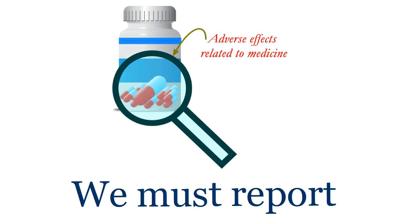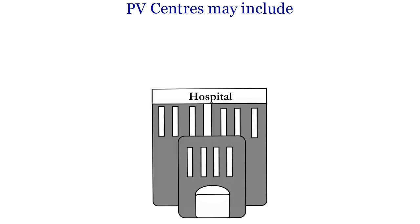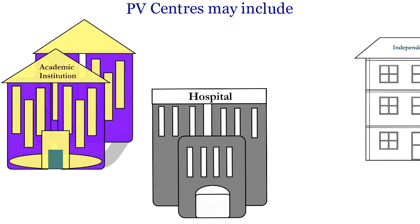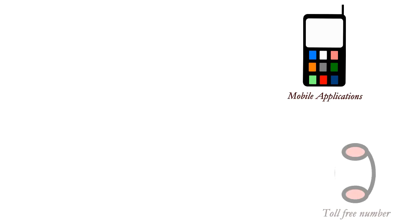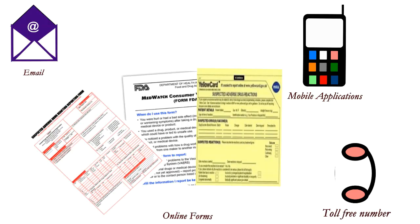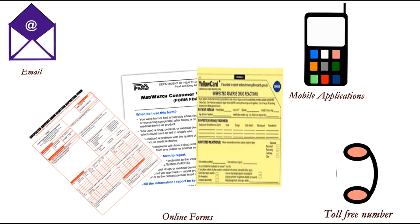There are approved pharmacovigilance centers where you can report medicinal adverse effects. These centers may include hospitals, academic institutions, or some independent facilities. For reporting, we can use online forms, mobile applications, emails, or even toll-free numbers. So while reporting an adverse effect, what information is required for the report to be considered valid?